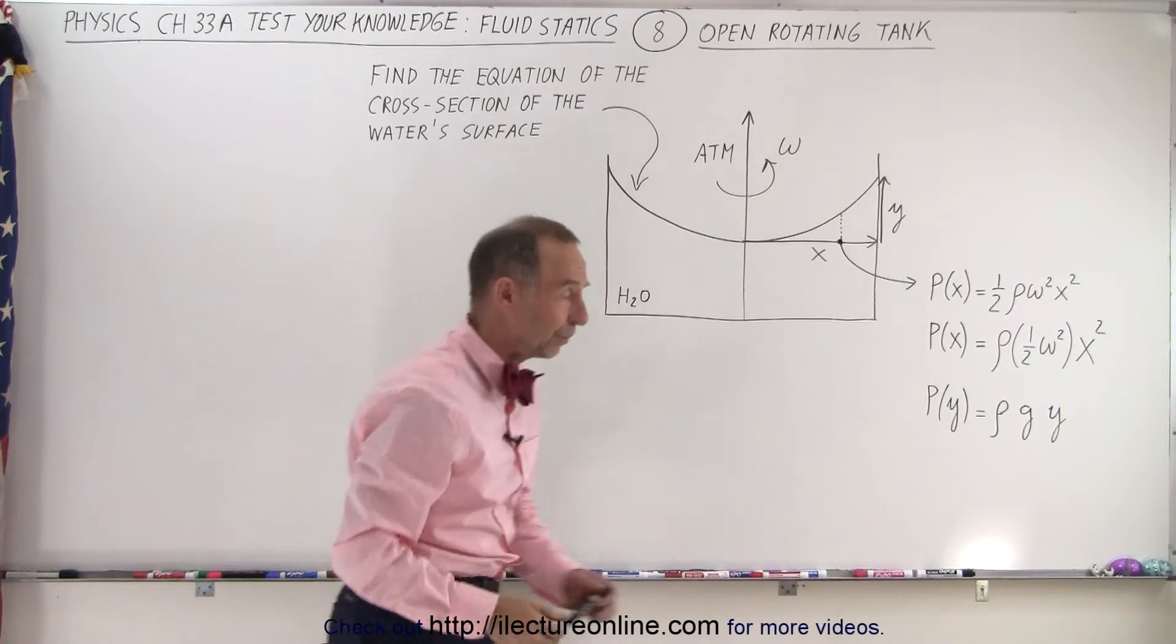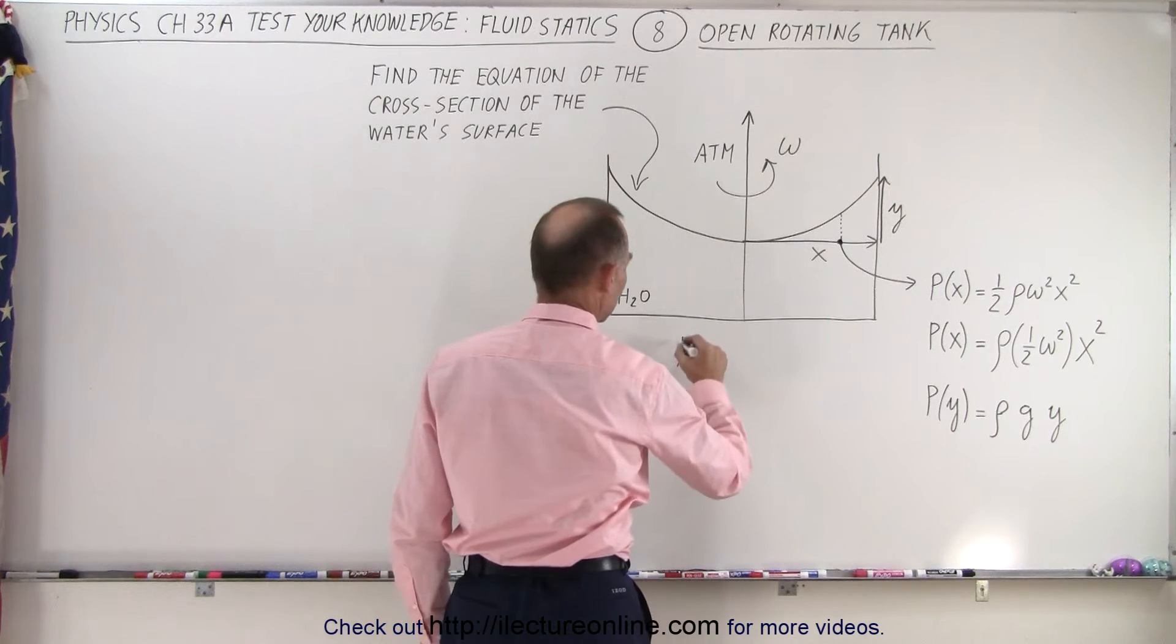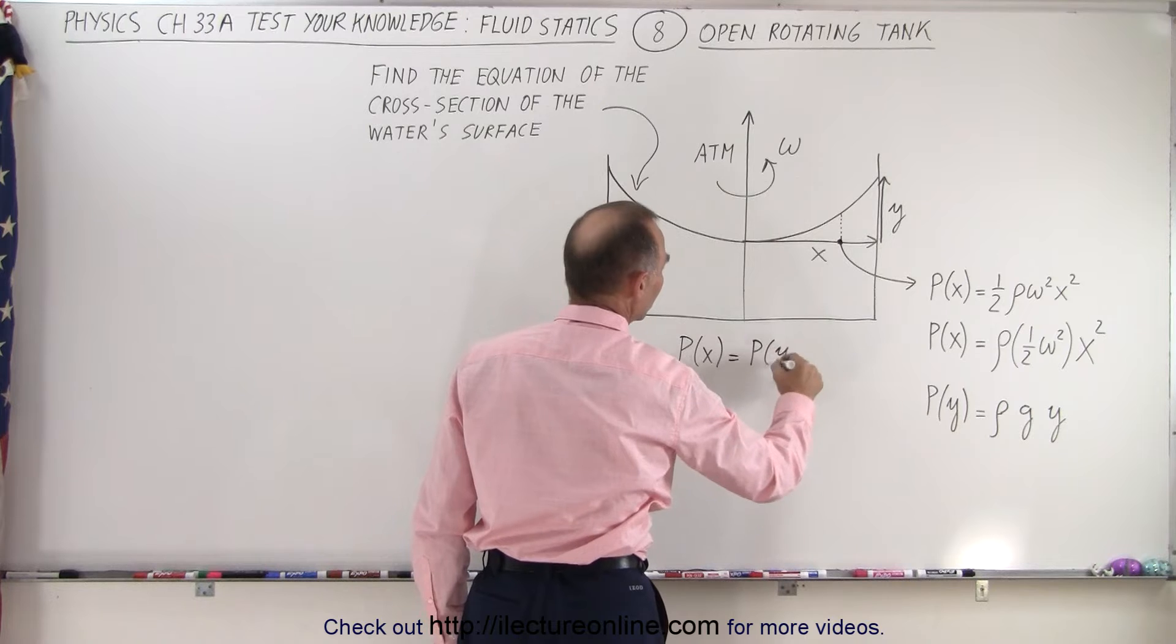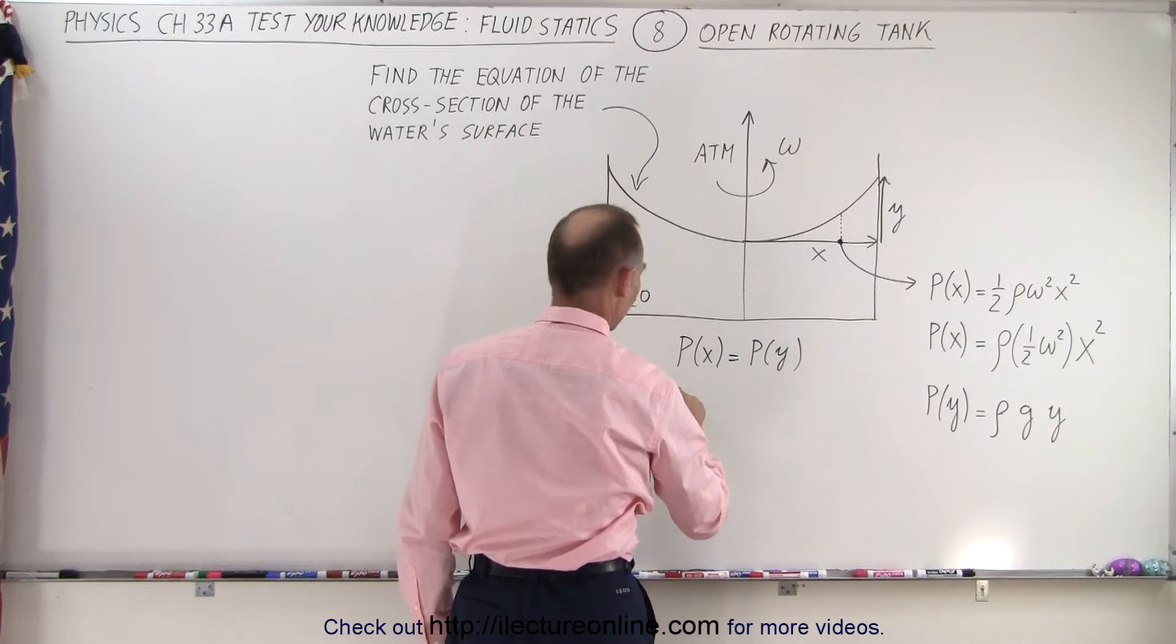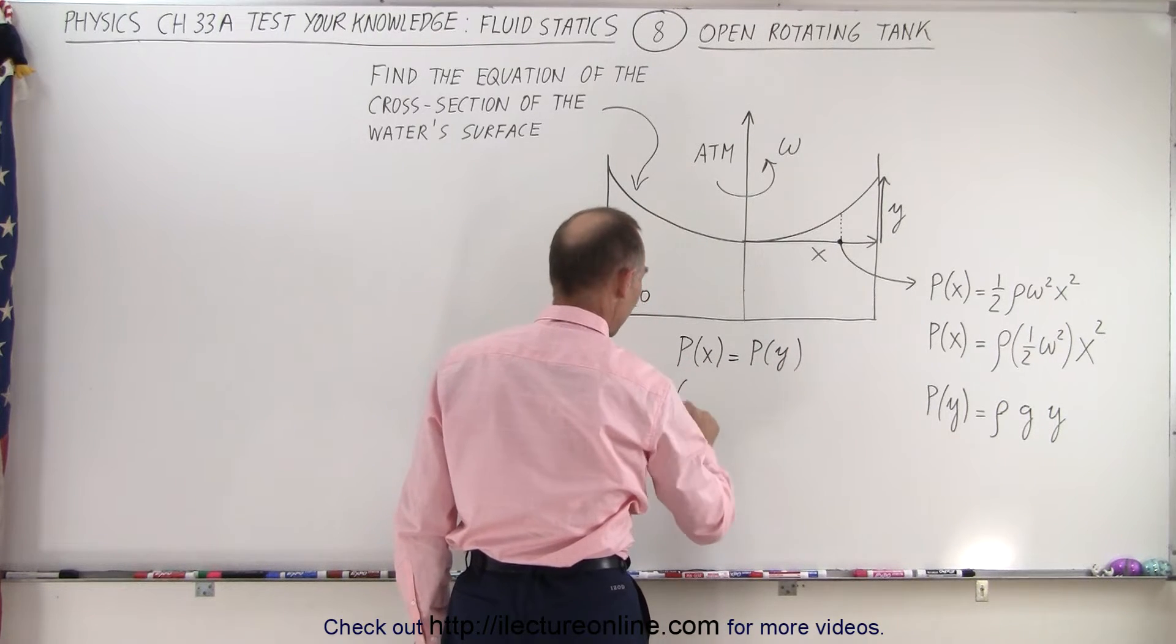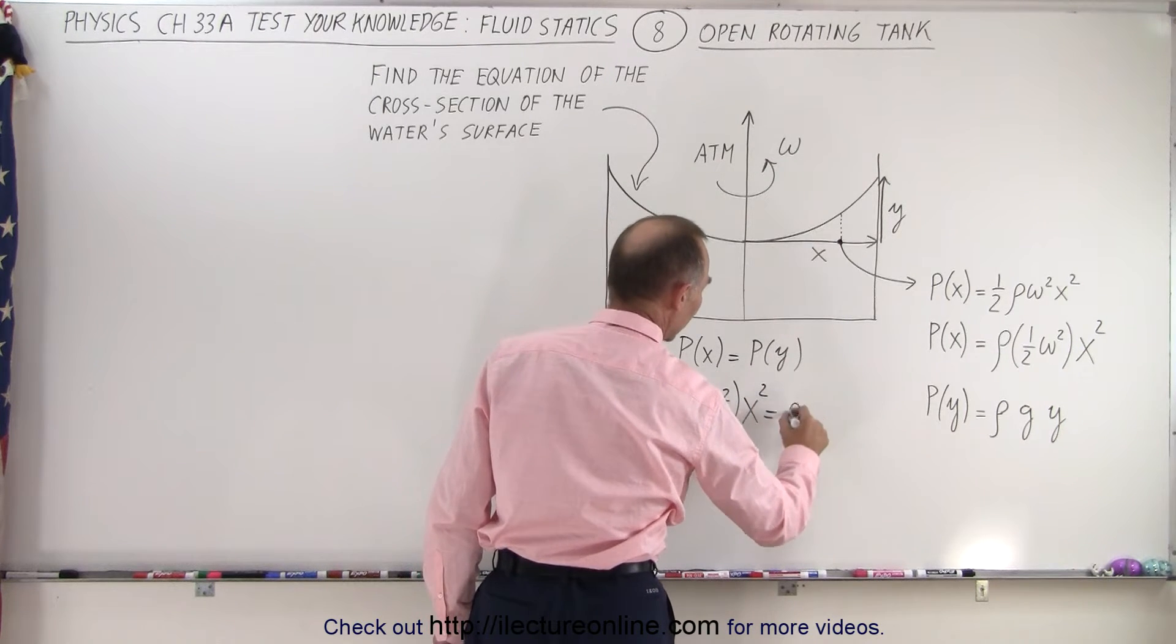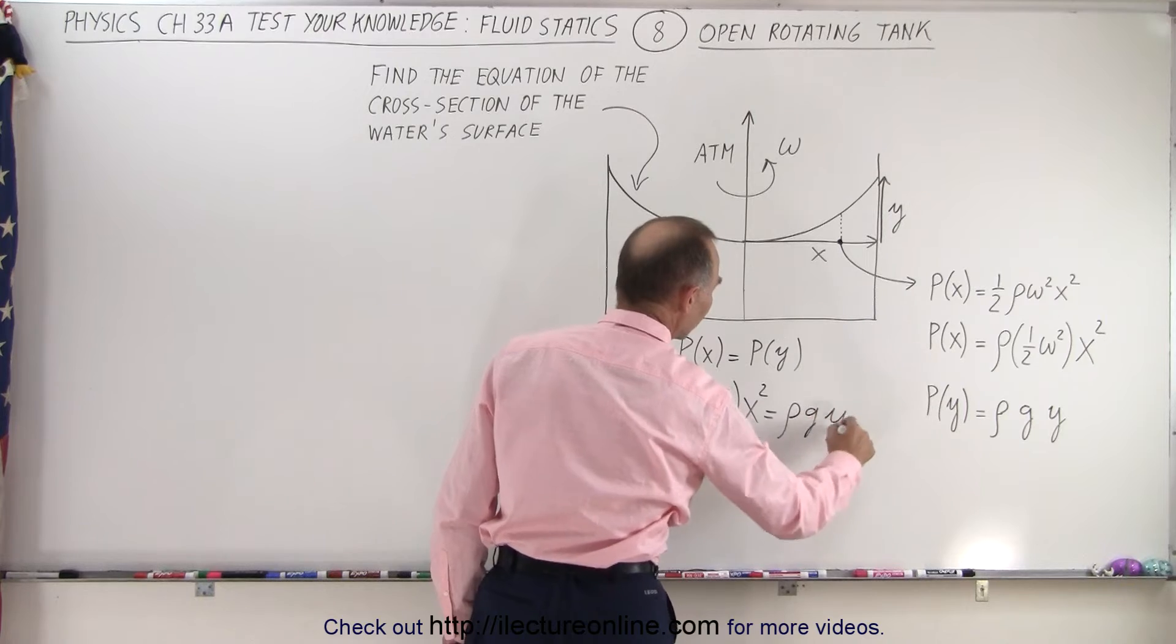We know that one already, and so we can say that the pressure in the x direction must equal the pressure in the y direction, which means that the density times one-half omega squared times x squared must equal the density times g times y.